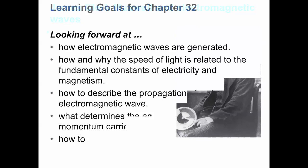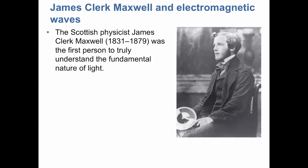James Clerk Maxwell can be thought of as the father of electromagnetism. Even though he built on previous discoveries, he was able to put them together in such a way that he unified all of them, modified some of them, and described everything about electric and magnetic phenomena using those equations.